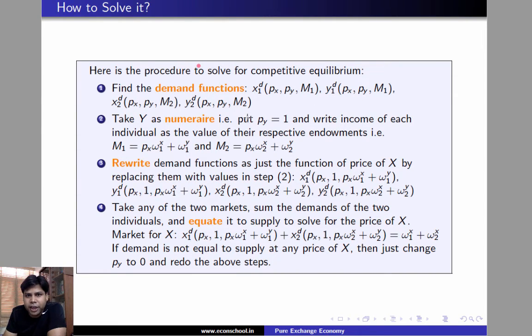The second step will be to take Y as numeraire and put PY equal to 1 and we write incomes of each individual as a value of the respective endowments. That is, M1 equals PX omega 1X plus omega 1Y and M2 equals PX omega 2X plus omega 2Y. Now, we rewrite these demand functions by substituting in place of PY 1 and in place of M1 and M2 the respective value of the endowments.